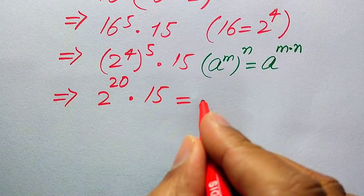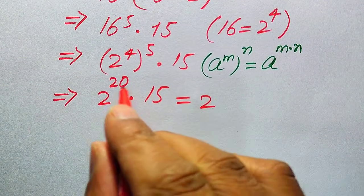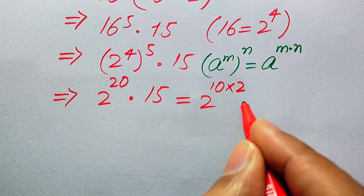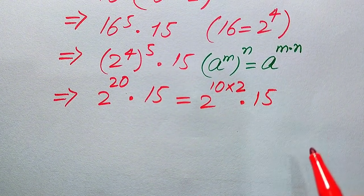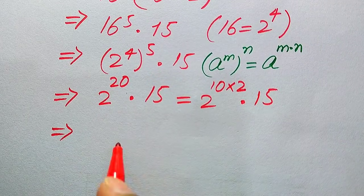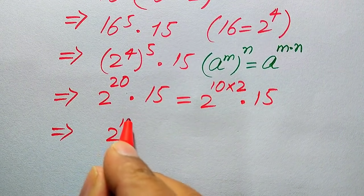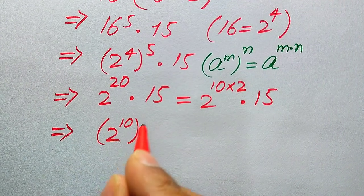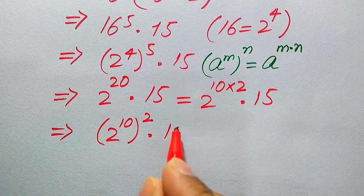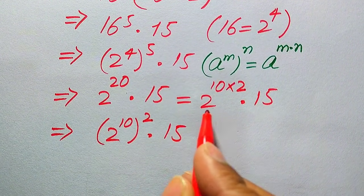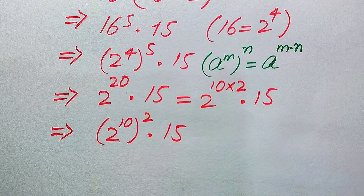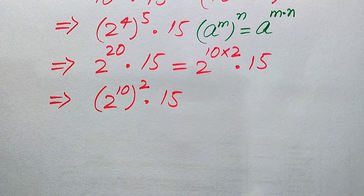We rewrite the exponent 20 as 10 multiplied by 2, so the term becomes 2 to the power of 10, with a whole exponent of 2, multiplied by 15. This gives us the form (2 to the power of 10) squared, times 15, according to the rule of exponents.